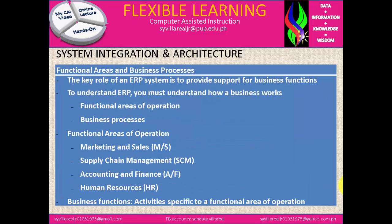In functional areas and business processes, the key role of an ERP system is to provide support for business functions. To understand ERP, you must understand how a business works, such as functional areas of operation and business processes. Functional areas of operation include: marketing and sales, supply chain management, accounting and finance, and human resources. And we have business functions — activities specific to a functional area of operation.